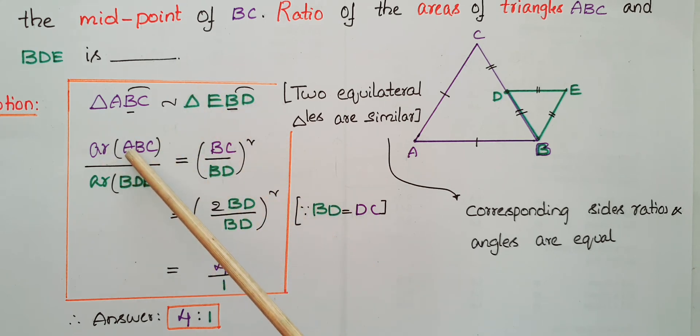Then we know that area ratio of areas of two similar triangles is equal to square of ratio of their corresponding sides. So area of ABC by area of BDE is equal to BC by BD whole square.